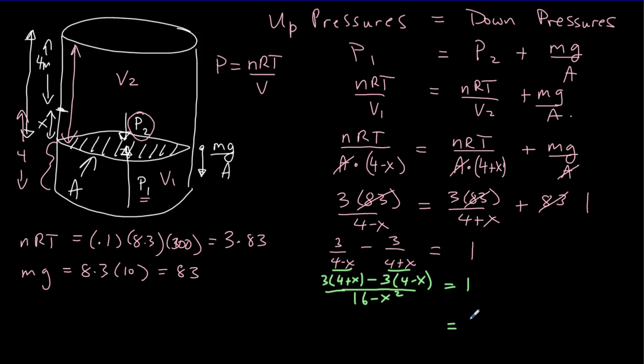Divide both sides by 3. You'll get 1 third. Then on the top we'll have 4 minus 4 and x minus negative x. So we're going to get 2x on the top and 16 minus x squared on the bottom. Let's cross multiply. 6x must be equal to 16 minus x squared.